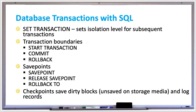There's savepoint, which saves internal transaction data and associates the data with the identifier. There's release savepoint, which discards the identifier and save data. And rollback to, which resets transaction data to the save point values, restarts processing at the save point, and releases all subsequent save points.